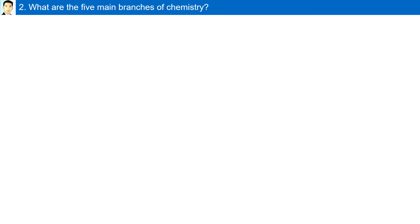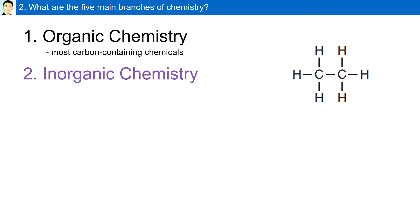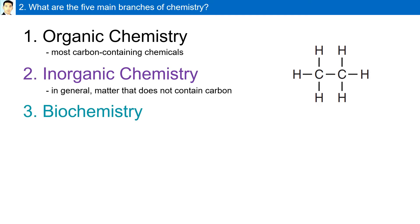What are the five main branches of chemistry? First, organic chemistry — this focuses on most carbon-containing chemicals. Second, inorganic chemistry — which concerns, in general, matter that does not contain carbon.